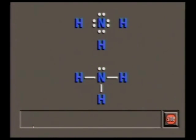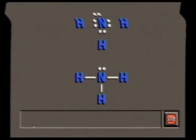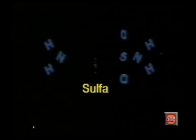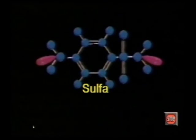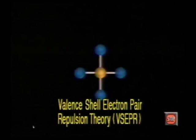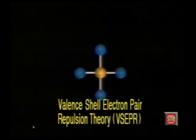Electron dot diagrams and structural diagrams are two-dimensional models of molecules. This is fine for very small molecules, but understanding the chemistry of more complex molecules requires a three-dimensional perspective. To get an idea of what these molecules look like, we use the valence-shell electron pair repulsion theory, VSEPR.